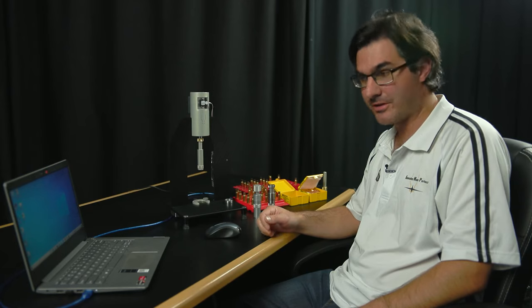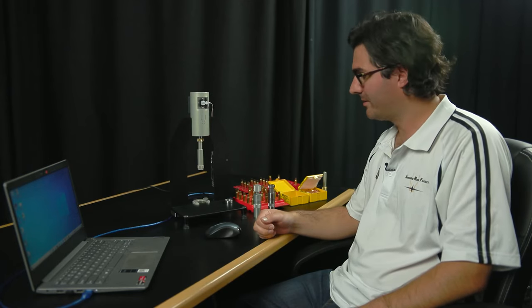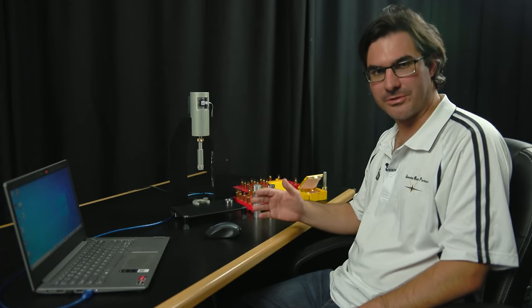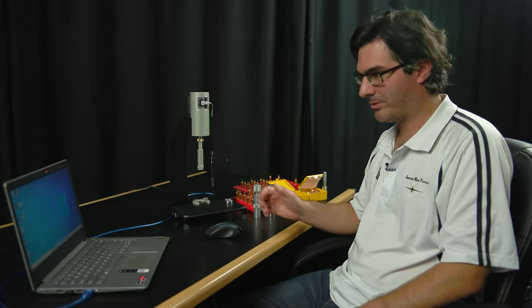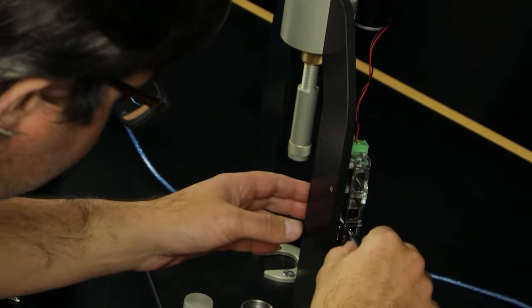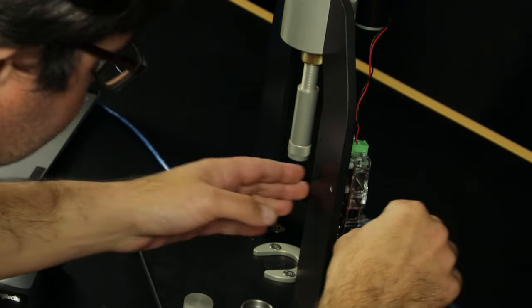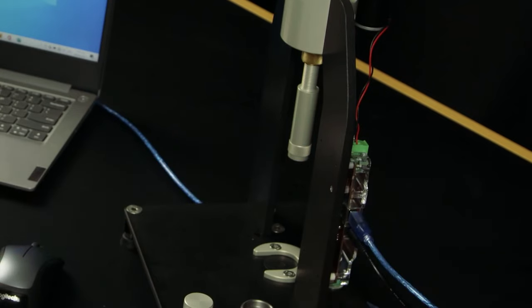Now that we've fully assembled the press and we've got our AMP press app installed on our computer, we're ready to connect the two together. First of all, take our power cable, plug that into the circuit board. Then take our USB cable and plug that into the circuit board as well.